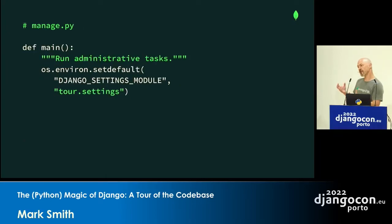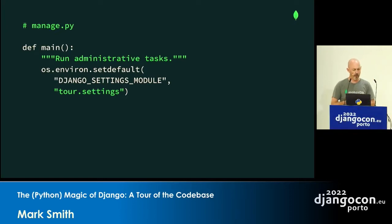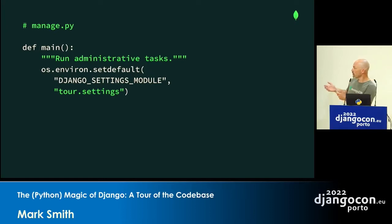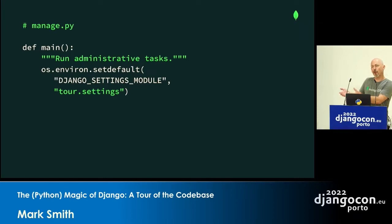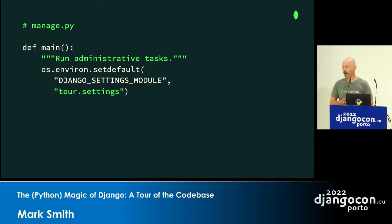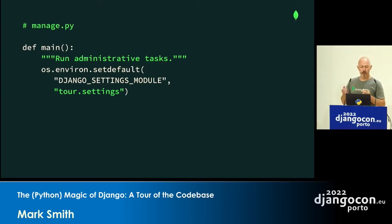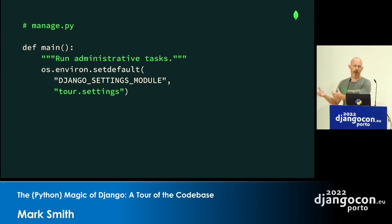This pattern isn't just in settings.py — there are a bunch of modules defined as strings there. There's also one created in your manage script. My project is called 'tour', and it just gives a path to the settings file under my tour namespace. Again, this is a string that tells Django we want to load this module.